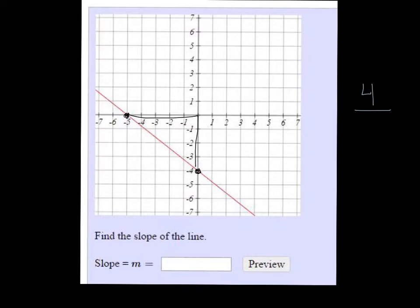So my vertical change is 4, and my horizontal change is 1, 2, 3, 4, 5, and then I just have to think about, is it a positive or negative slope? Well, this line is going down from left to right, so this is negative 4/5.